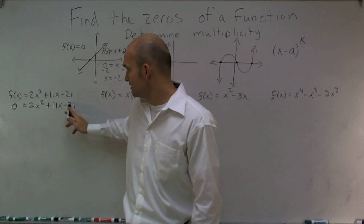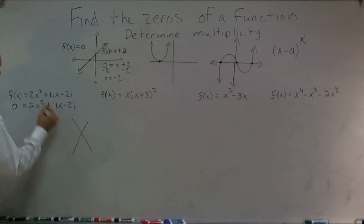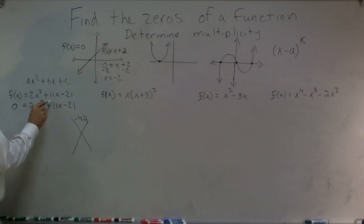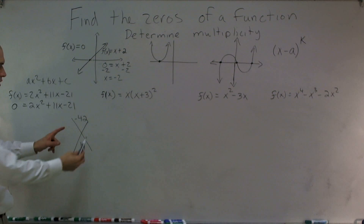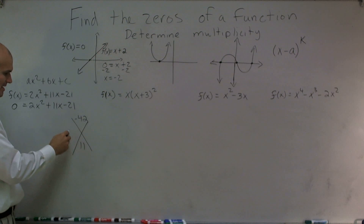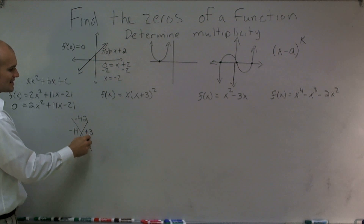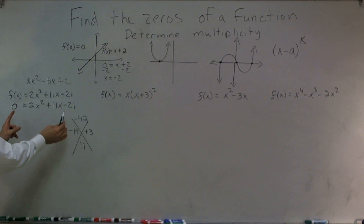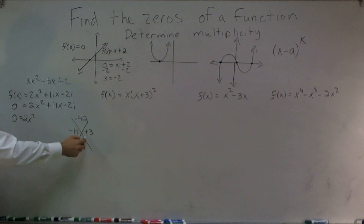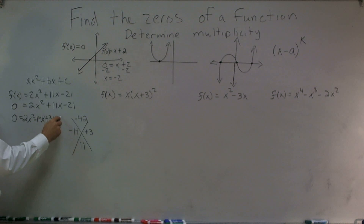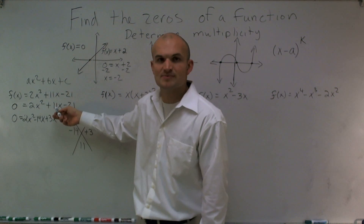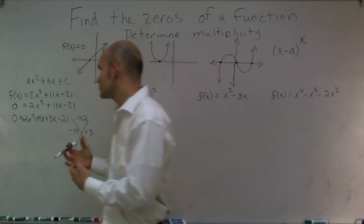I'm going to multiply my a times my c of the quadratic equation. A times c gives me negative 42, and I write my b on the bottom. I need to figure out what two numbers multiply to give me negative 42 but add to give me 11. That gives me negative 14 and positive 3. Now I'm going to rewrite those into the equation: 0 equals 2x squared, and instead of 11x, I write negative 14x plus 3x minus 21. A negative 14x plus 3x still gives me 11x, but now this allows us to factor further.